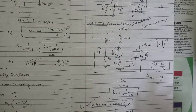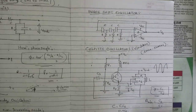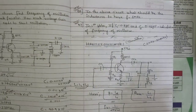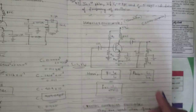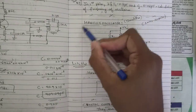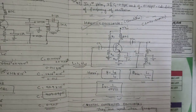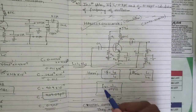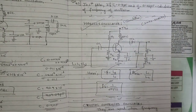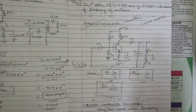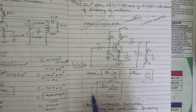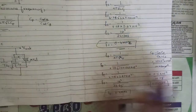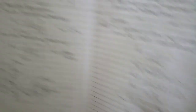One question on Colpitt's oscillator circuit diagram will be asked — note the circuit. One question on the phase shift oscillator and one on the Hartley oscillator may also be asked. For any of them, note the minimum voltage gain, β value, and resonating frequency, which is f = 1 / (2π√LC) for both Colpitt's and Hartley oscillators.